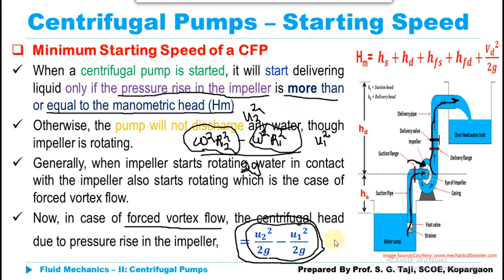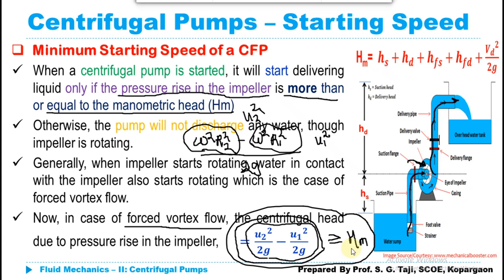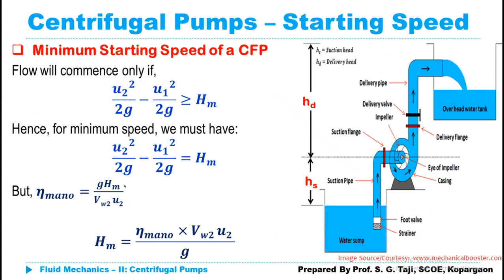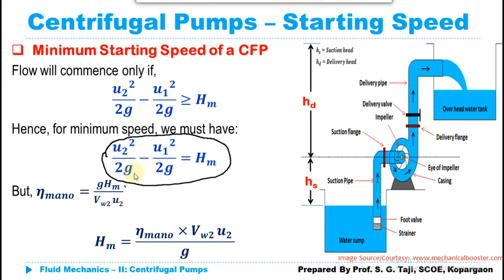Flow will take place only if this centrifugal head is greater than or equal to the manometric head. We want to calculate the minimum speed of the centrifugal pump at which flow will commence. For the minimum condition, we set the centrifugal head equal to the manometric head: u₂²/(2g) − u₁²/(2g) = H_m. The minimum speed of the pump is such that the centrifugal head developed inside the pump equals the manometric head. Using this equation we will derive the minimum starting speed of the pump.